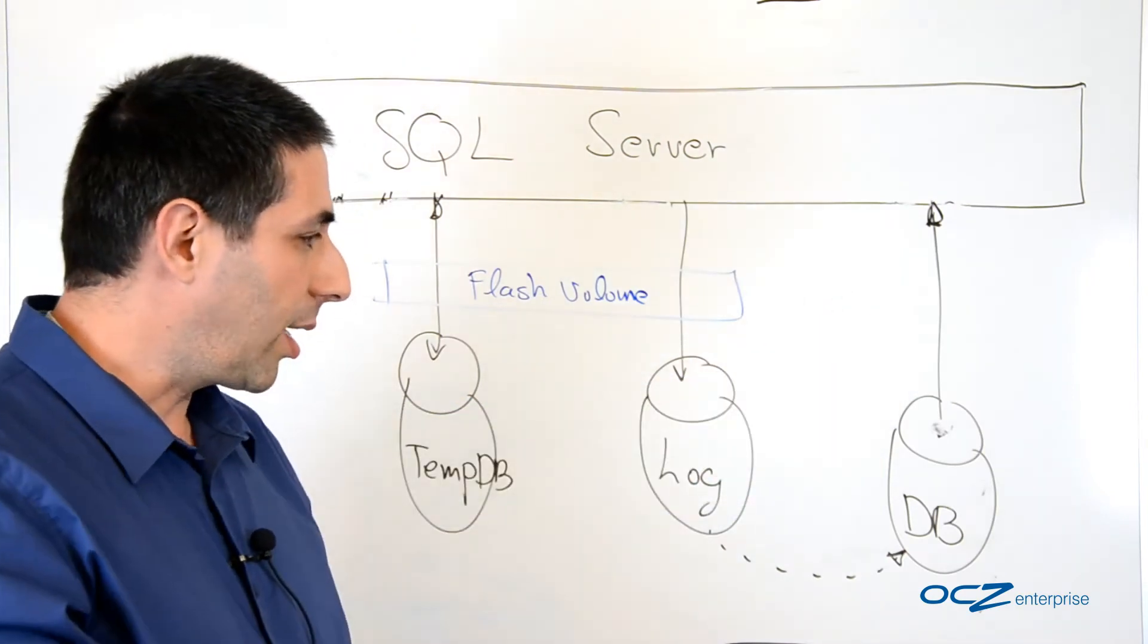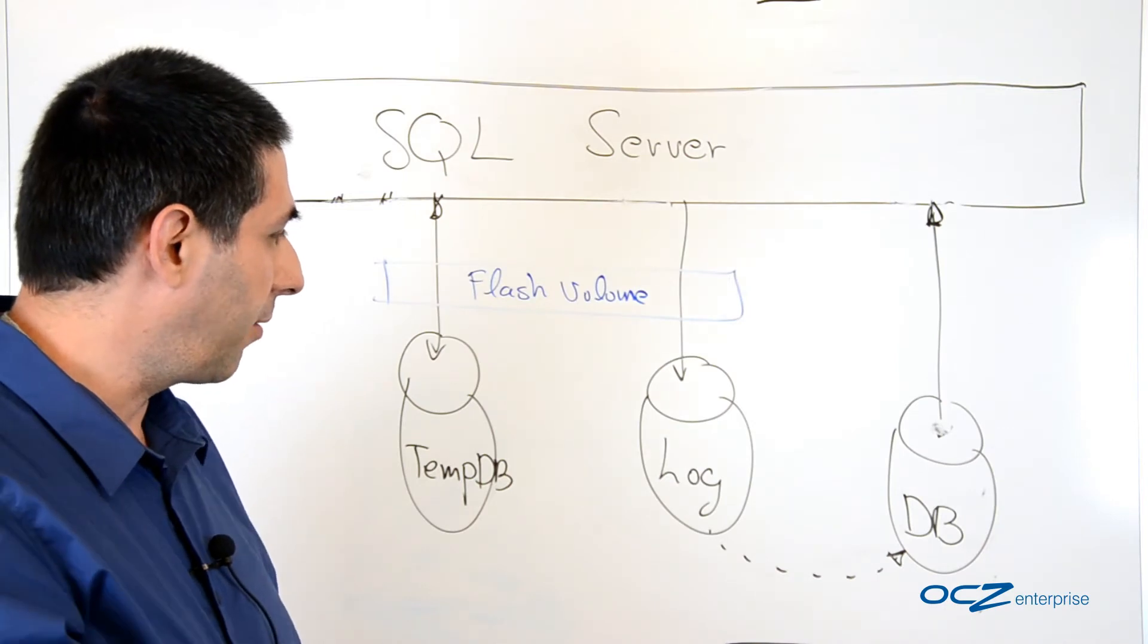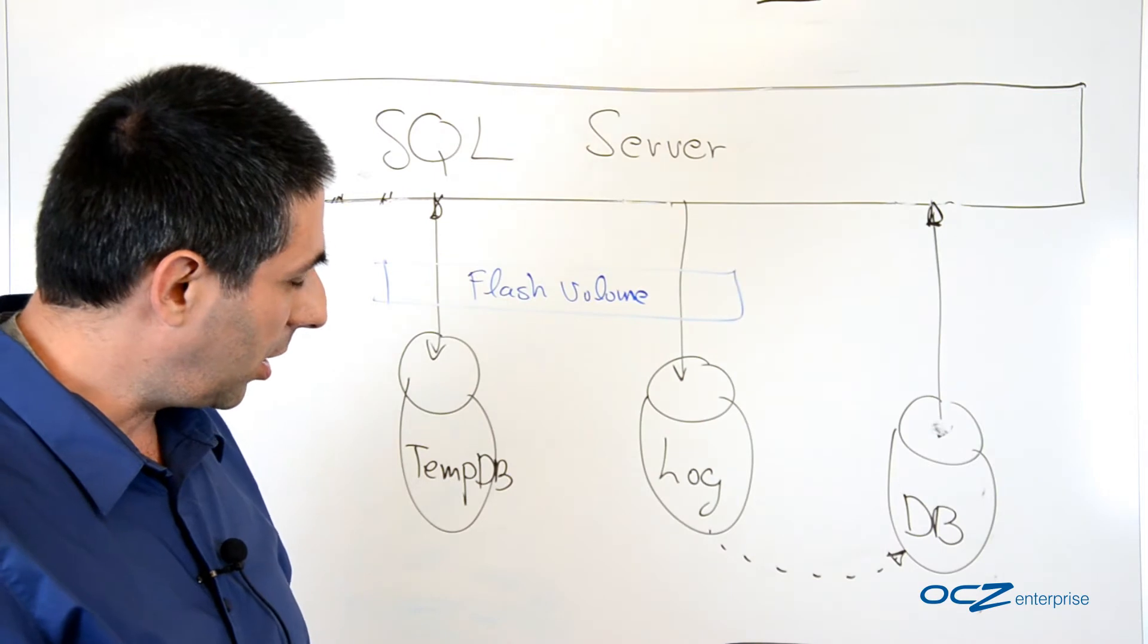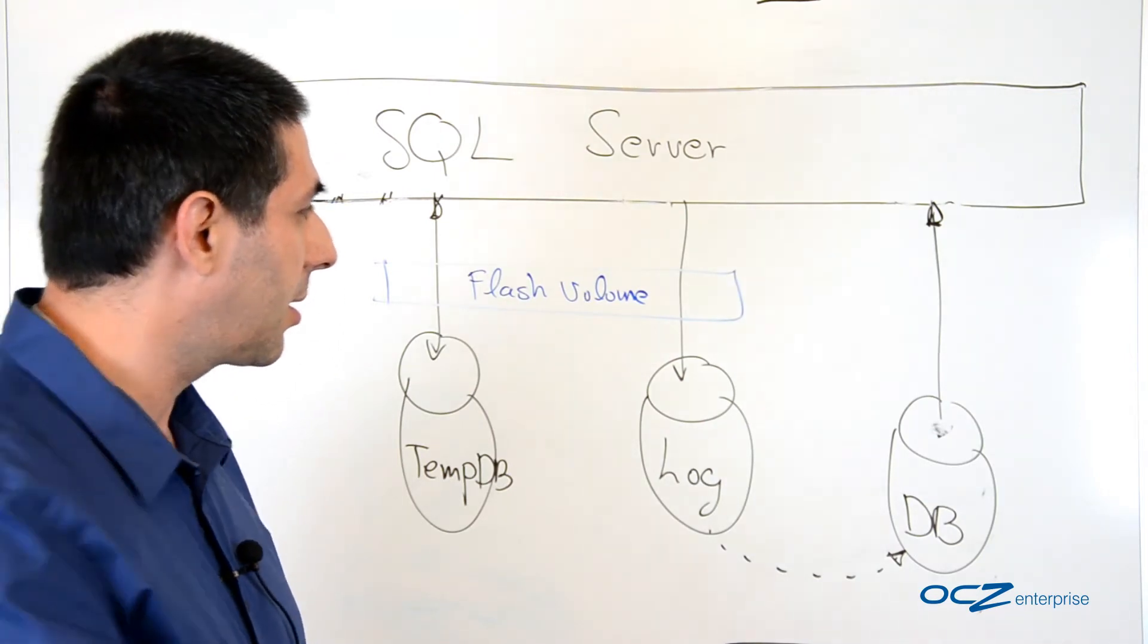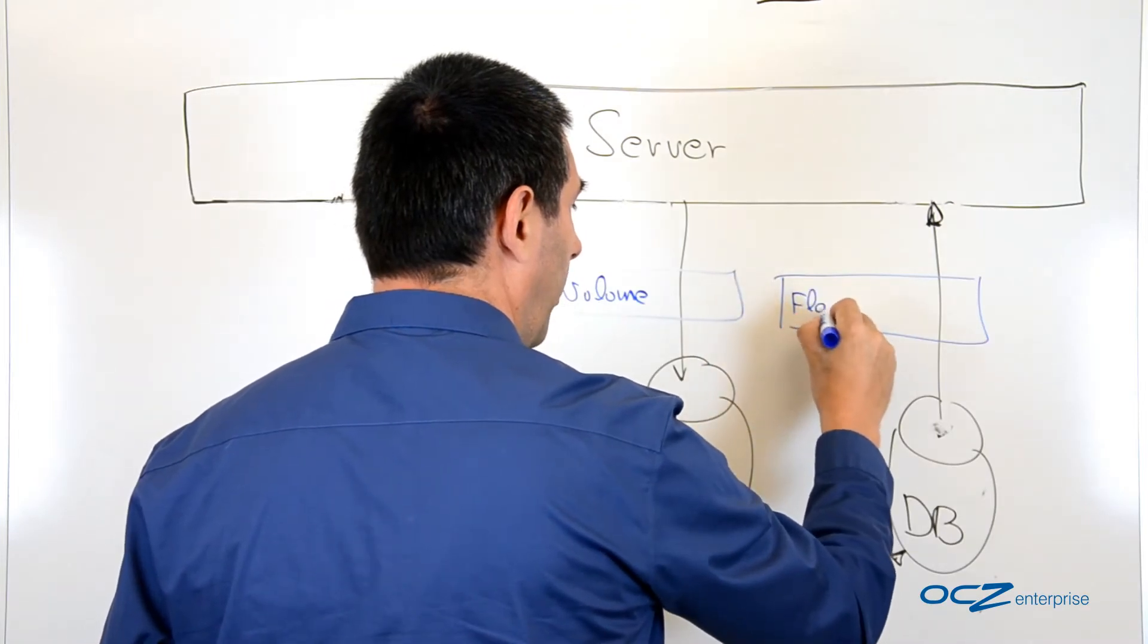The database is relatively a very big file and cannot be placed on the flash volume because the flash volume is relatively small—one terabyte, two terabytes and so on. So, the way of accelerating the database is by having it cached on the flash.